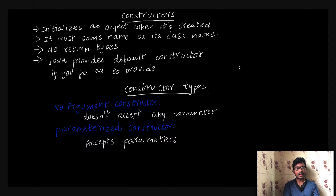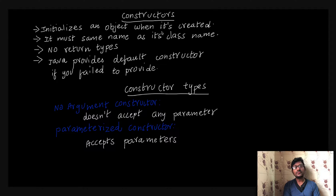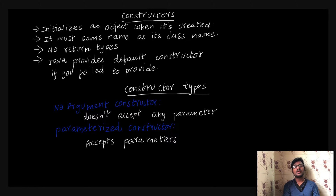Let's discuss constructors in detail using theoretical content and programs. A constructor initializes an object when it's created. In a previous video we saw how to create an object — when we create one, we need to assign values to its variables. For example, a human object needs variables like height and weight assigned. You can assign these values using constructors.